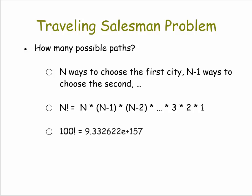100 factorial is 9.3 times e to the 157th, which is a very big number. In fact, the factorial function n factorial is greater than 2 to the n, our standard example for an exponential function.